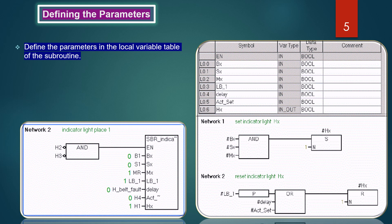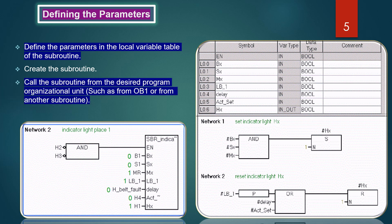To use subroutines in your program you must carry out three steps in the following order: first, define the parameters in the local variable table of the subroutine; second, create the subroutine; and third, call the subroutine from the desired program organizational unit, such as from OB1 or from another subroutine.